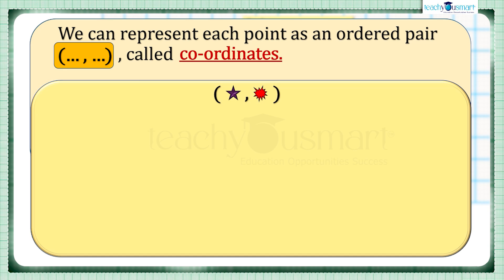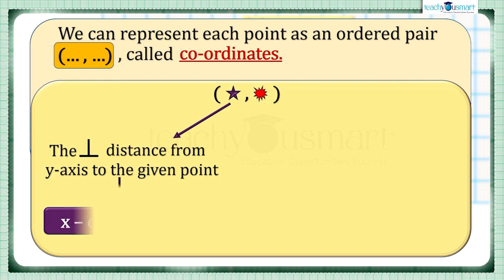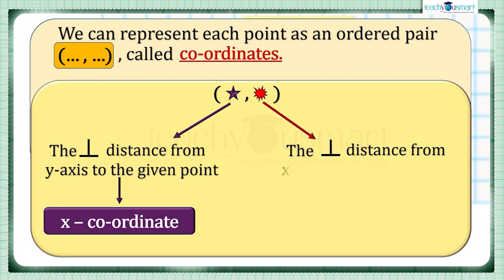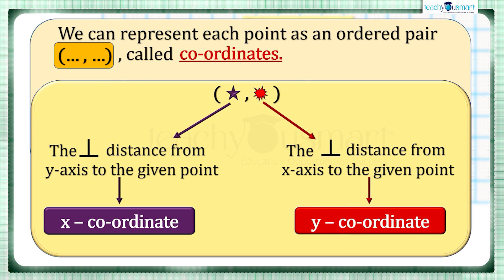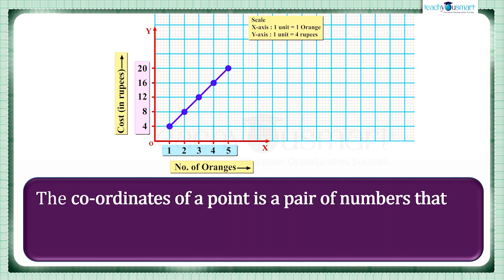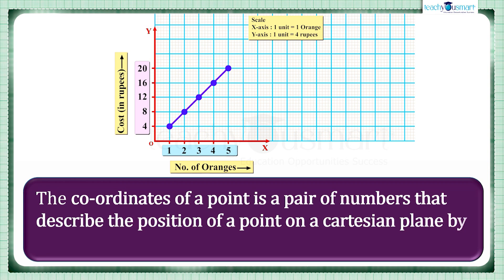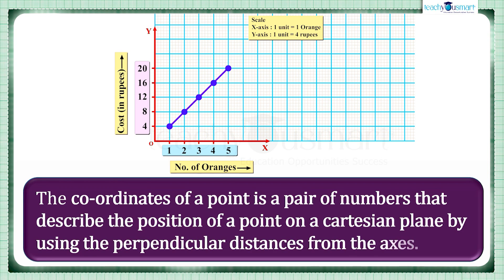It consists of a pair of numbers in which the first number shows the perpendicular distance from the y-axis to the given point, called the x-coordinate, and the perpendicular distance from the x-axis to the given point is called y-coordinate. That is, the coordinates of a point is a pair of numbers that describe the position of a point on a Cartesian plane by using the perpendicular distances from the axis.